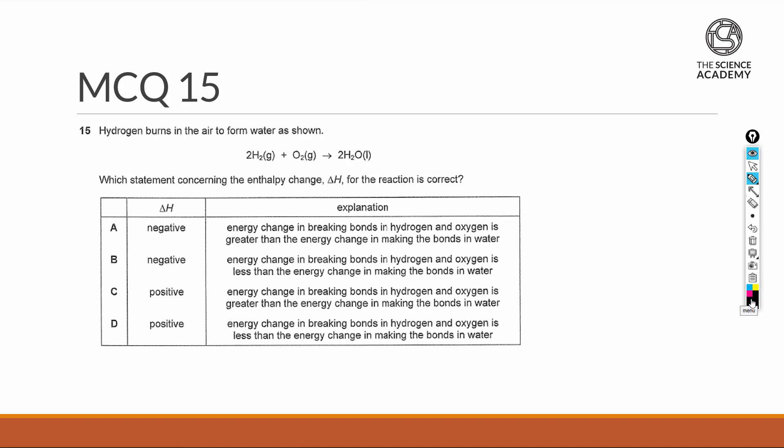So again we do not have any information about the bond energy because if I have, I could have calculated the bond energy of H single bond H, O double bond O. This forward section, the reactant part will be involved in bond breaking and bond breaking needs heat to be taken in, so bond breaking is an endothermic event.